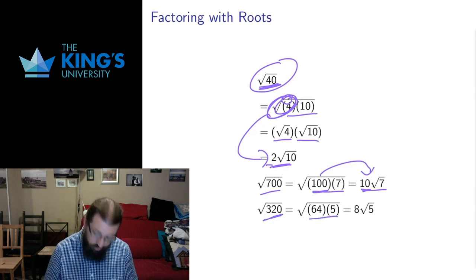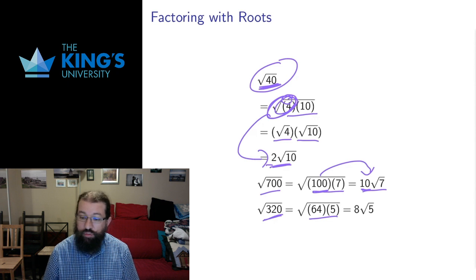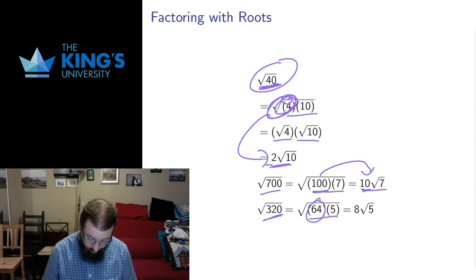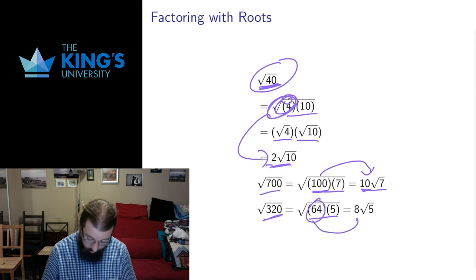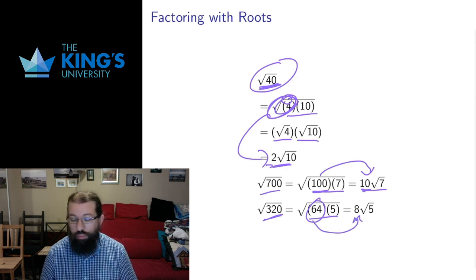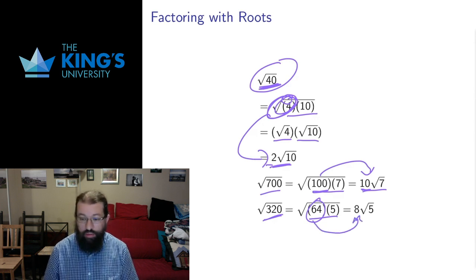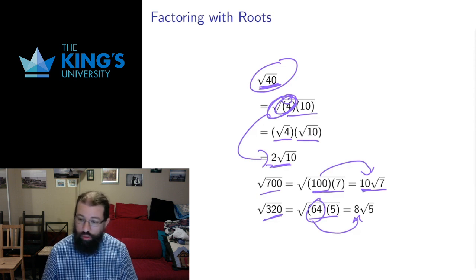320 factors as 64 times 5. 64 is a square number, its square root is 8. So I take it out of the square root, it becomes its square root, 8 outside. So root 320 is the same as 8 times root 5.